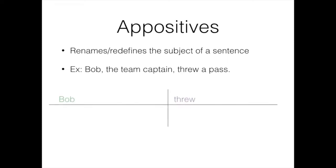Now we have Bob as the subject and threw as the verb, and pass as a direct object telling us what Bob threw, and the word a modifies pass. So far this is just like any other sentence that we've diagrammed this whole time.